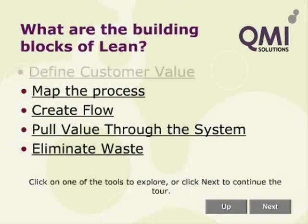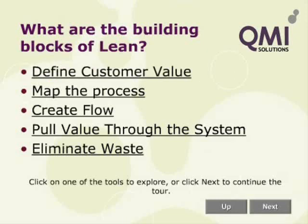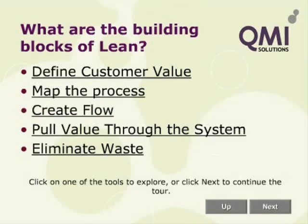The goals of Lean, including Lean Manufacturing, are to provide products quicker at less cost, with improved quality and safety, whilst maintaining flexibility to meet the customer's changing requirements. There are a number of Lean tools that we can use when implementing Lean, but it is important to use a structured approach to Lean thinking. Lean thinking relies on five key principles, and each of these principles uses a number of tools.